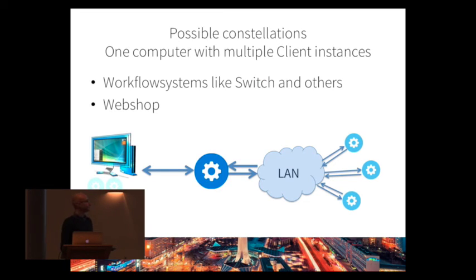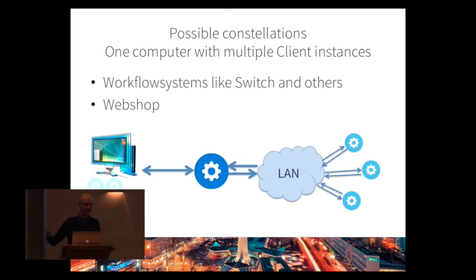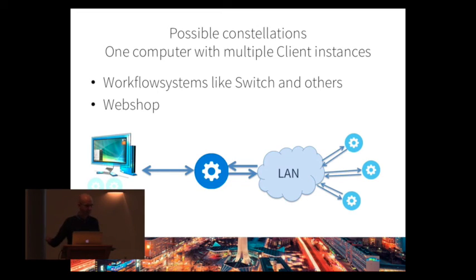One possible constellation is one computer with multiple client instances — for example, workflow systems like Switch or file trainers — creating calls, sending them to the dispatcher, and having satellites on a remote machine or even the same machine do the processing and send results back. A classical use case is a webshop: you don't want files processed on your live system, but on a different machine for stability or load reasons.